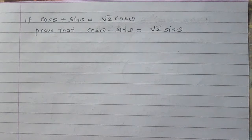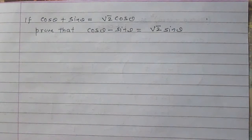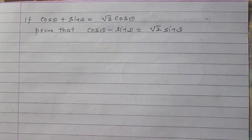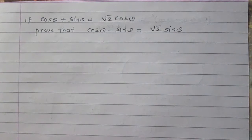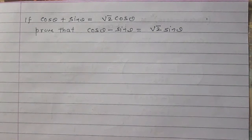If cos θ plus sin θ is equal to square root of 2 multiplied by cos θ, then prove that cos θ minus sin θ is equal to square root of 2 multiplied by sin θ.